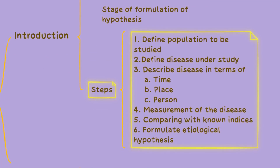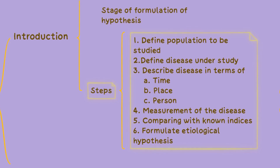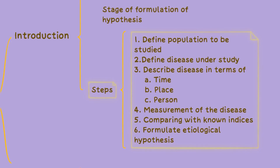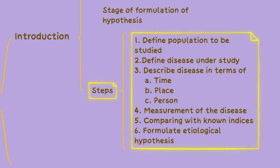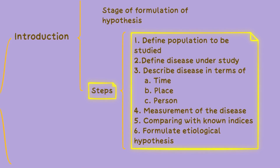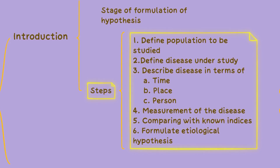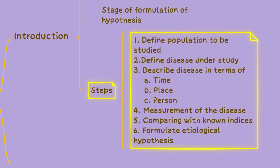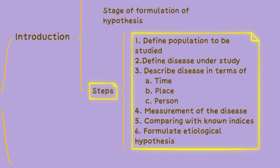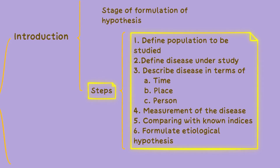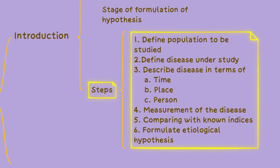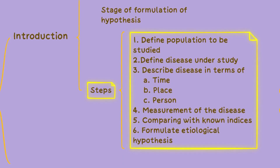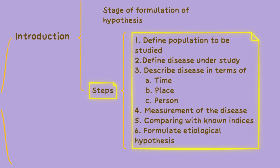The first step in descriptive epidemiology is to define the population that will be studied. Next, the disease under study is defined and described in detail, including examining its various aspects such as its occurrence over time, its distribution across different geographic locations, and its impact on different individuals. To accurately measure the disease, reliable and standardised methods are employed, which may involve collecting data on the number of cases, the severity of symptoms, or any relevant risk factors.